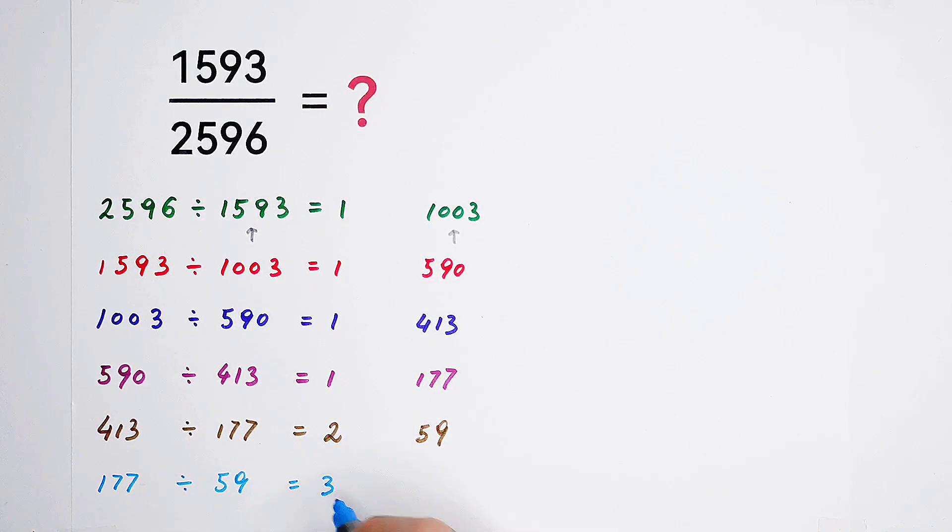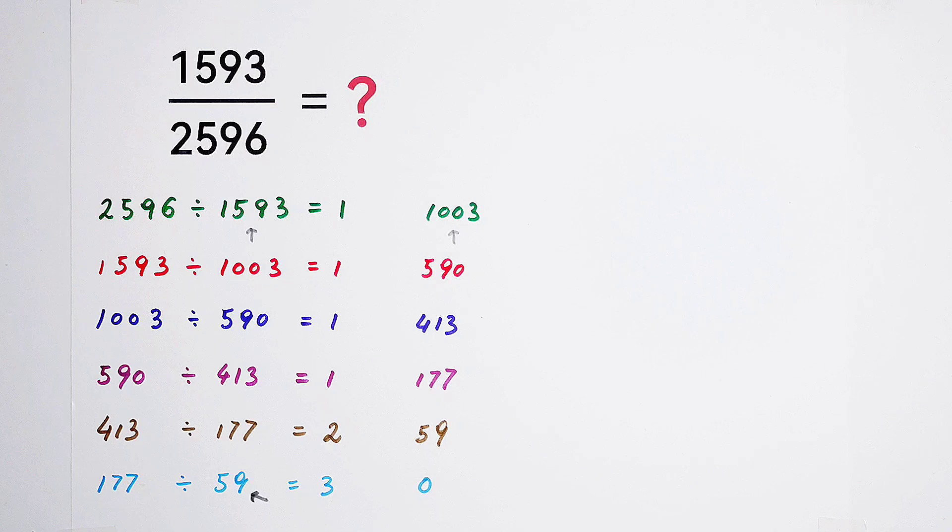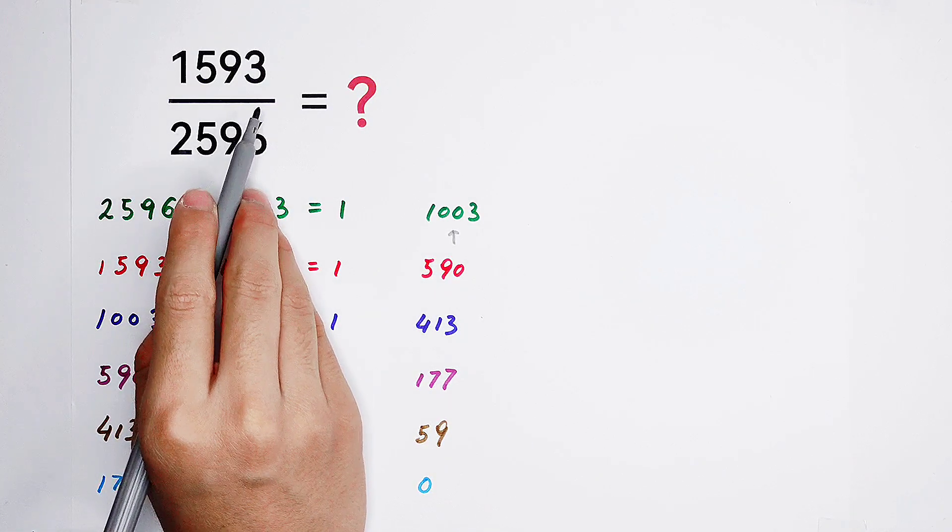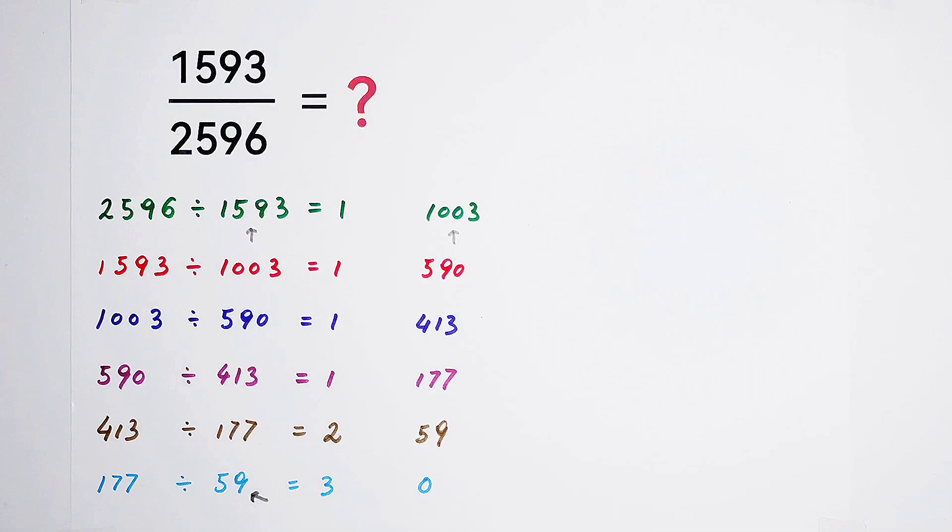Quotient is 3 and the remainder is, you can find out that 3 times 59 is equal to 177. So, that means the remainder is 0. If the remainder is 0, our process will be finished. So, the greatest common divisor of 1,593 and 2,596 is 59.